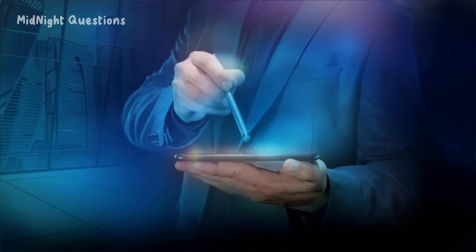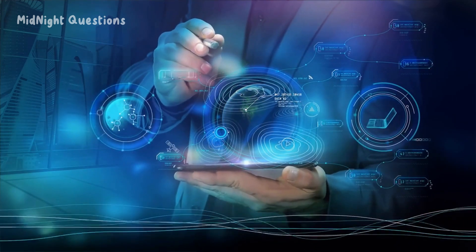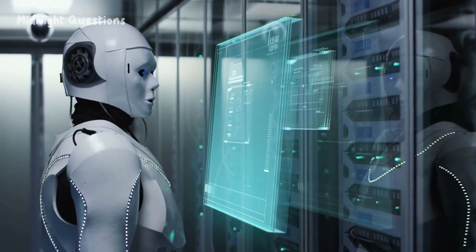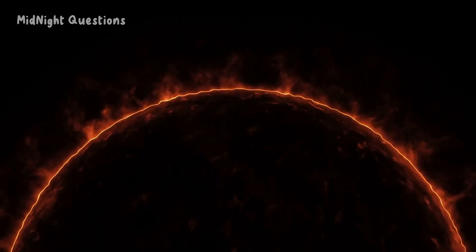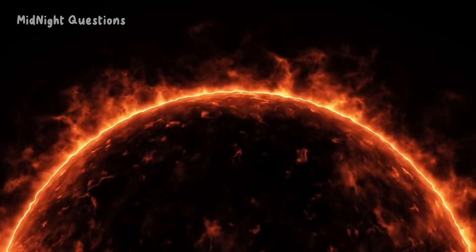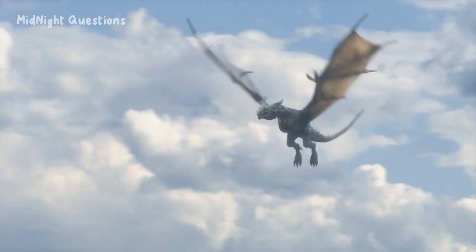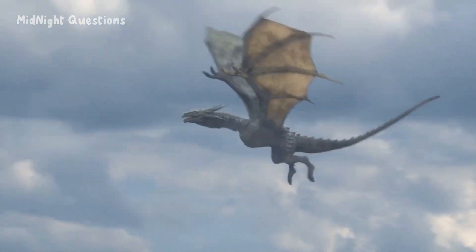The evolution of species over 1 billion years is difficult to predict, but there are several possibilities to consider. Evolution is a slow process that happens over many generations, so the changes that we see over 1 billion years could be significant. If the sun becomes hotter over time, as it is expected to do, the temperature on Earth will also increase.